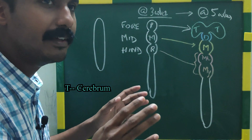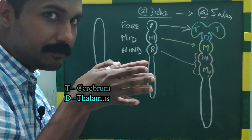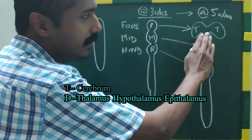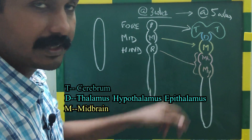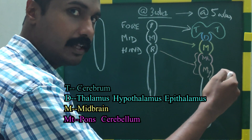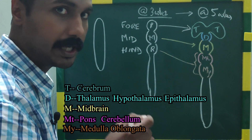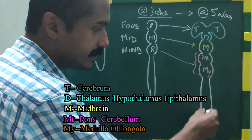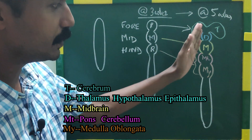The diencephalon corresponds to anything with the word thalamus — the thalamus, hypothalamus, epithalamus — all derivatives of the diencephalon. The midbrain remains midbrain in adult anatomy. The metencephalon develops into the pons and the cerebellum — pons in front, cerebellum behind. The myelencephalon corresponds to the medulla oblongata. And the rest of the neural tube corresponds to the spinal cord. This is how the neural tube gives rise to the brain and the spinal cord.